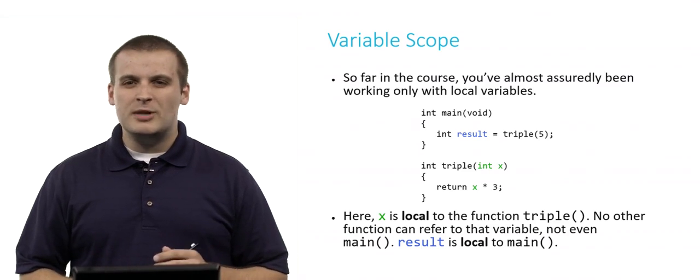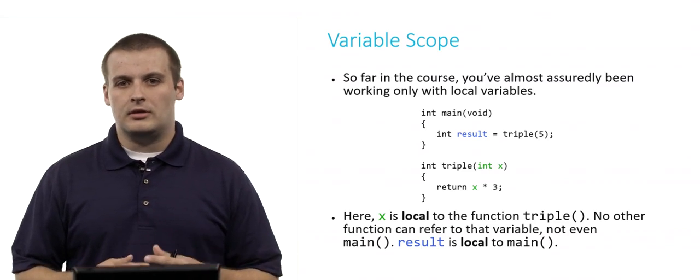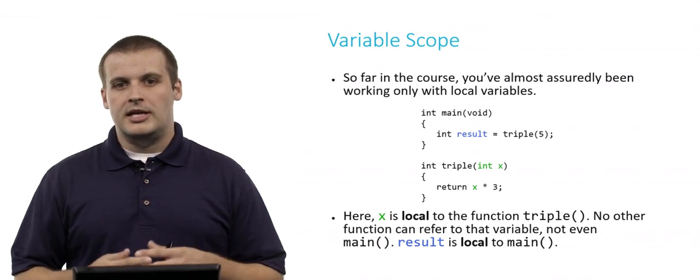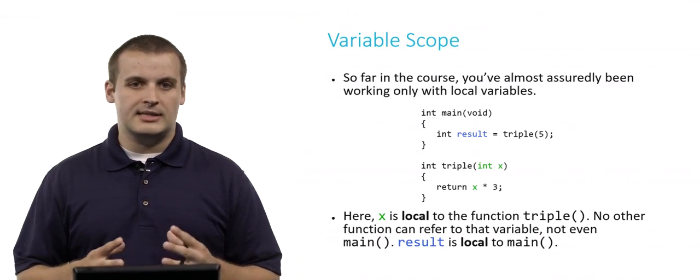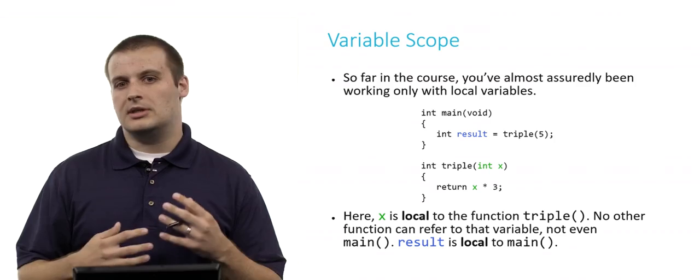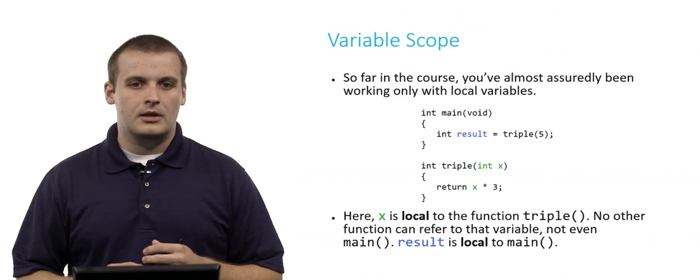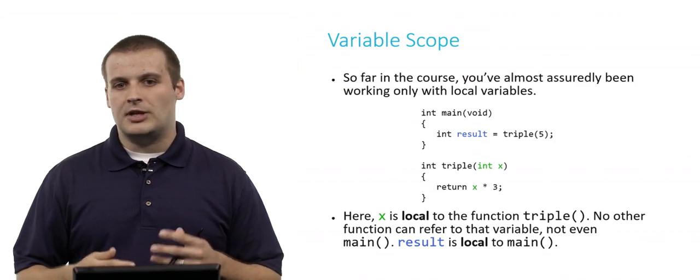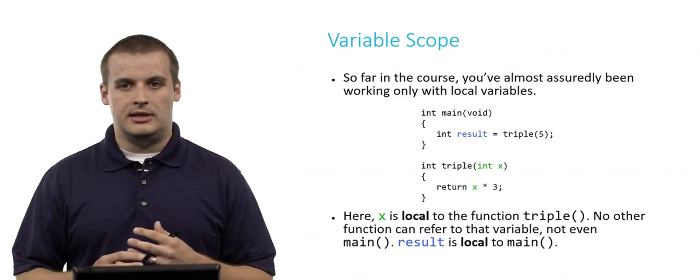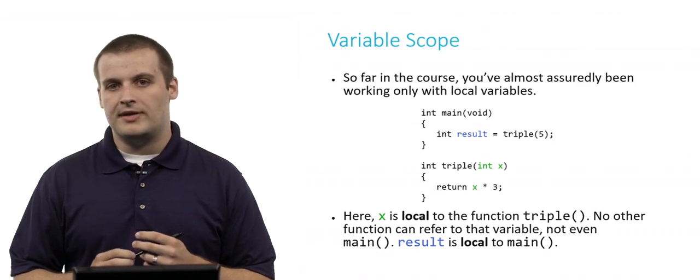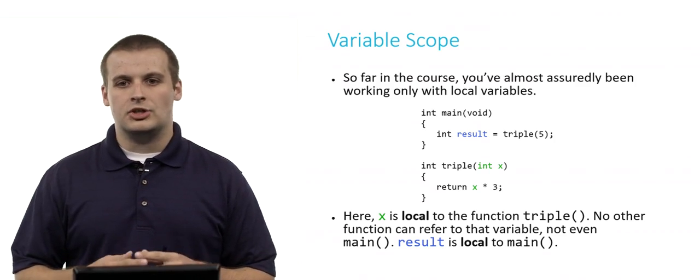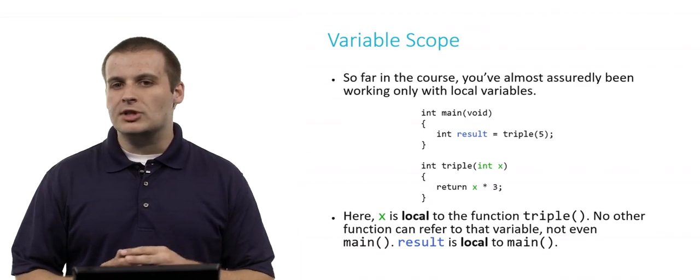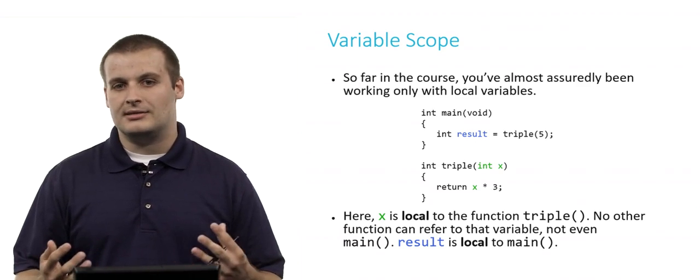So far in the course, you've pretty much been working exclusively with local variables. Here's an example of a very simple main function and a very simple additional function that we've written. In this case, x, which I've colored green just to highlight the locality or the scope of that variable, is local to the function triple. Main cannot refer to x at all. It doesn't know what it is.